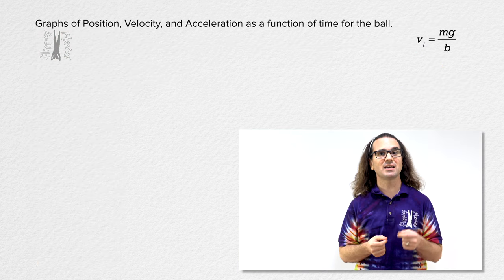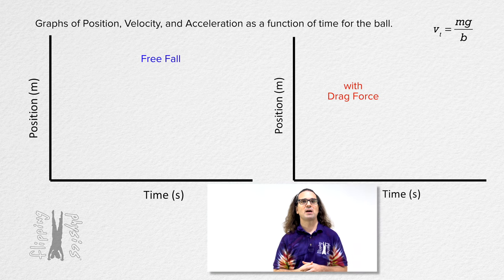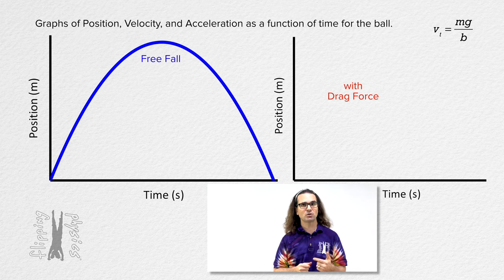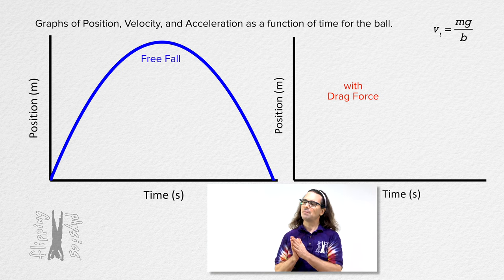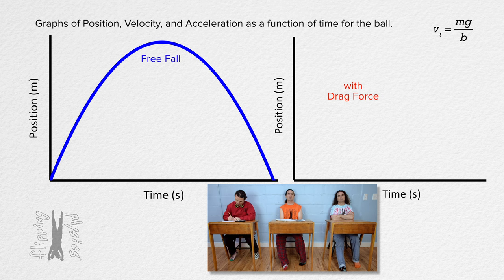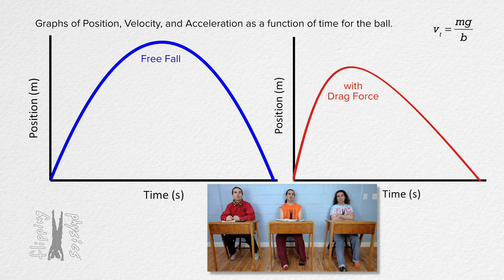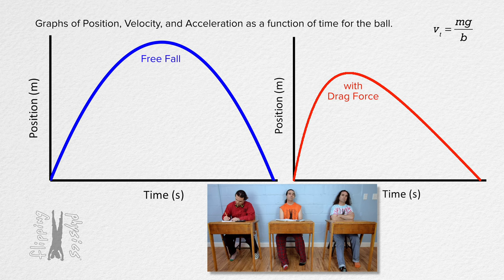Now let's look at graphs of position, velocity, and acceleration as a function of time for the dodgeball, comparing freefall — without a drag force — to the graphs with a drag force. The position-time graph in freefall is a symmetrical parabola because the time going up equals the time coming down. When we add a drag force, it is no longer symmetrical: the time going up is less than the time going down, so the apex of the curve shifts to a bit earlier in time, and assuming the same initial velocity, the ball reaches a smaller maximum height. If the ball also reaches terminal velocity, the final slope of the graph equals the terminal velocity: negative mg over b.